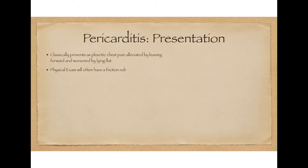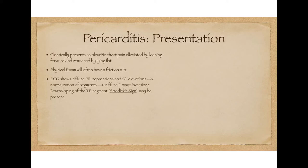A common tool that clinicians use to diagnose pericarditis is the ECG. The classic findings are due to inflammation of the myocardium from the nearby inflammation of the pericardium. Classically, these findings include starting with diffuse PR depressions and ST elevations, followed by normalization of the PR and ST segments, and then finally diffuse T wave inversions. Rarely, you might see downsloping of the TP segment, which is termed the spodic sign.